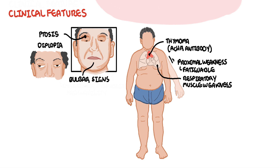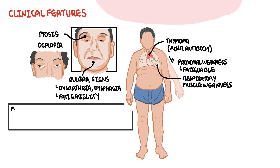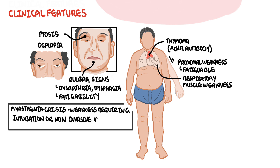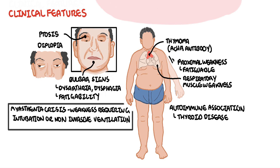Bulbar involvement causes weakness of the muscles in the throat, leading to dysarthria, dysphagia (difficulty swallowing), and fatigability. Importantly, myasthenic crisis is a medical emergency characterized by severe weakness involving bulbar and respiratory muscles requiring intubation or non-invasive ventilation. Because myasthenia gravis is an autoimmune disease, there is an association with other autoimmune diseases including thyroid disease, Sjögren's syndrome, and systemic lupus erythematosus.